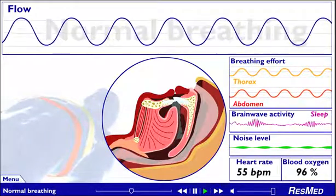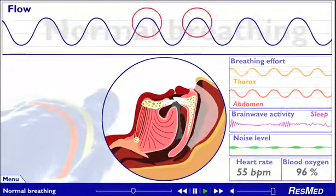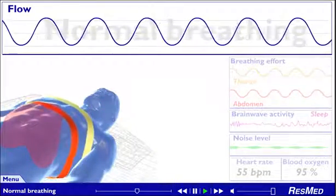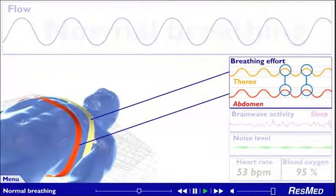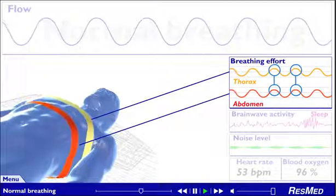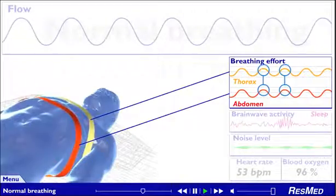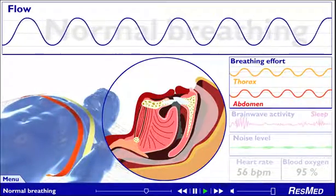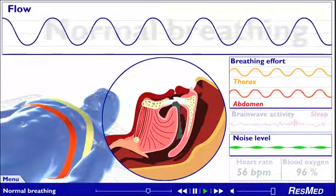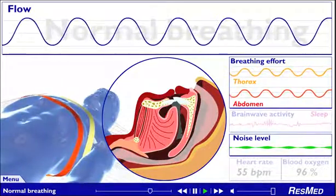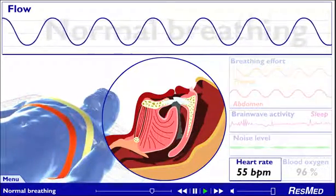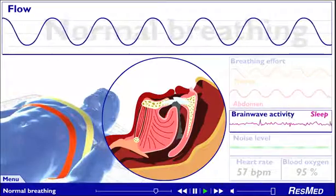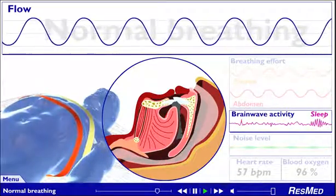As air flows freely and evenly into and out of the lungs, a typical bell-shaped curve of the airflow is seen. The air flows because of the bellows effect of the diaphragm muscle, which sucks air into the lungs. The respiratory bands attached to the chest and abdomen measure the effort required to breathe, producing two traces which rise and fall along with the airflow trace. Notice how the airflow and breathing effort traces move in sync. When you are sleeping normally, your heart rate is stable, the oxygen level in your blood remains high, and brainwave activity is as it should be during normal sleep.